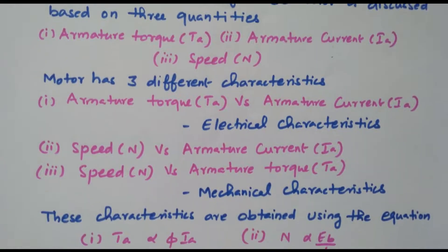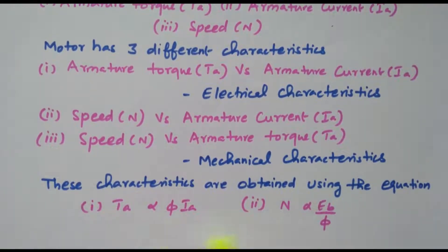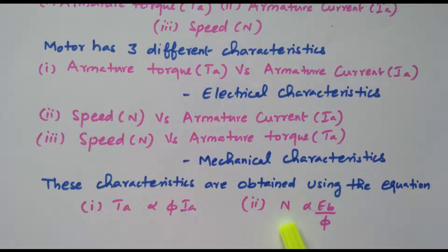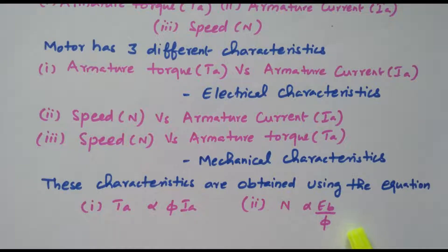These three characteristics are given by two different relations. T_A is directly proportional to φ into I_A — armature torque is proportional to flux times armature current. The second relation: N is directly proportional to E_B divided by φ — speed is proportional to back EMF and inversely proportional to flux. Based on that we can analyze the characteristics of a DC motor.